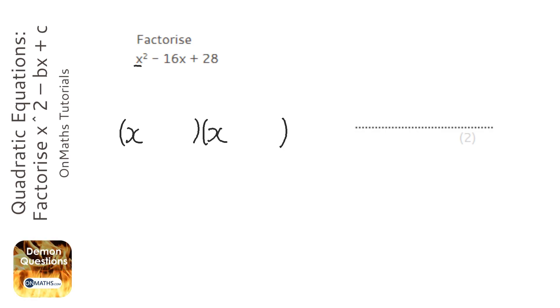The slightly harder bit is working out what comes second in each of the brackets. We've got to look at two numbers here. The number before the x is going to be our addition number, and the number left at the end, which is a positive 28, is going to be our multiplying number.